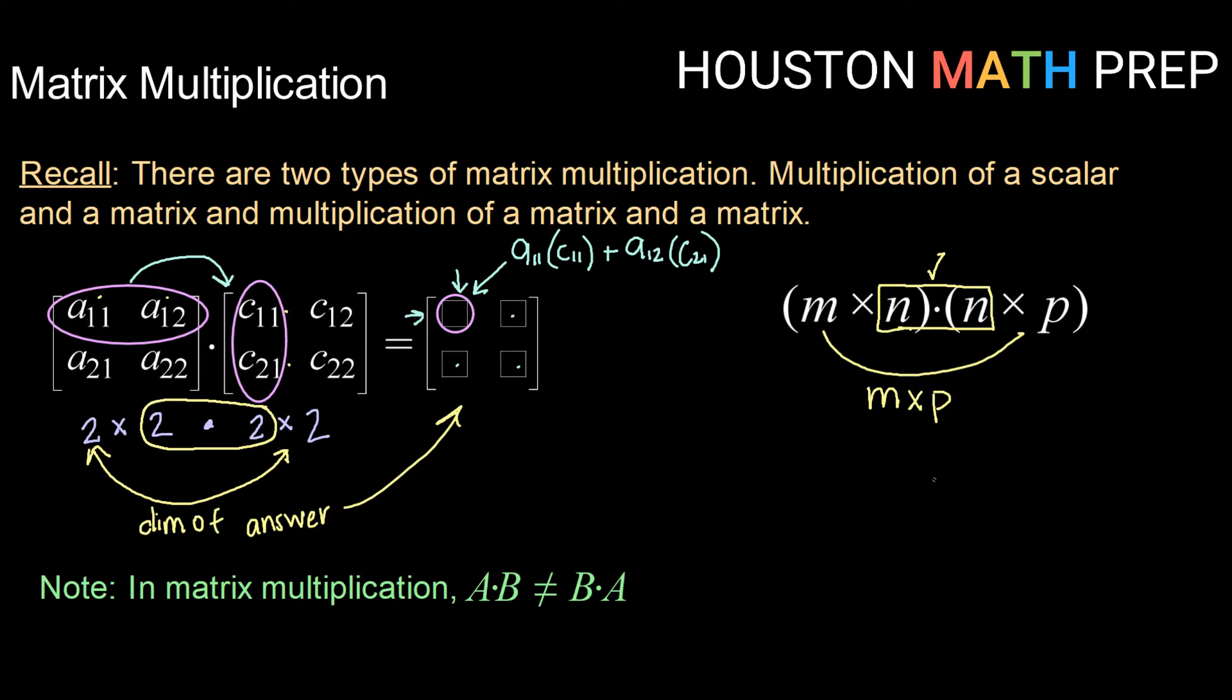The other thing we want to point out about matrix multiplication before we jump into some examples is that matrix multiplication is not commutative. What that means is that A times B is not the same thing as B times A. So we cannot just flip the matrices around left to right and say that they will be the same. If they are square matrices, like a 2 by 2 times a 2 by 2, then A times B and B times A will both be possible, but they will result in a different answer. So with all of that information, let's check out some examples.